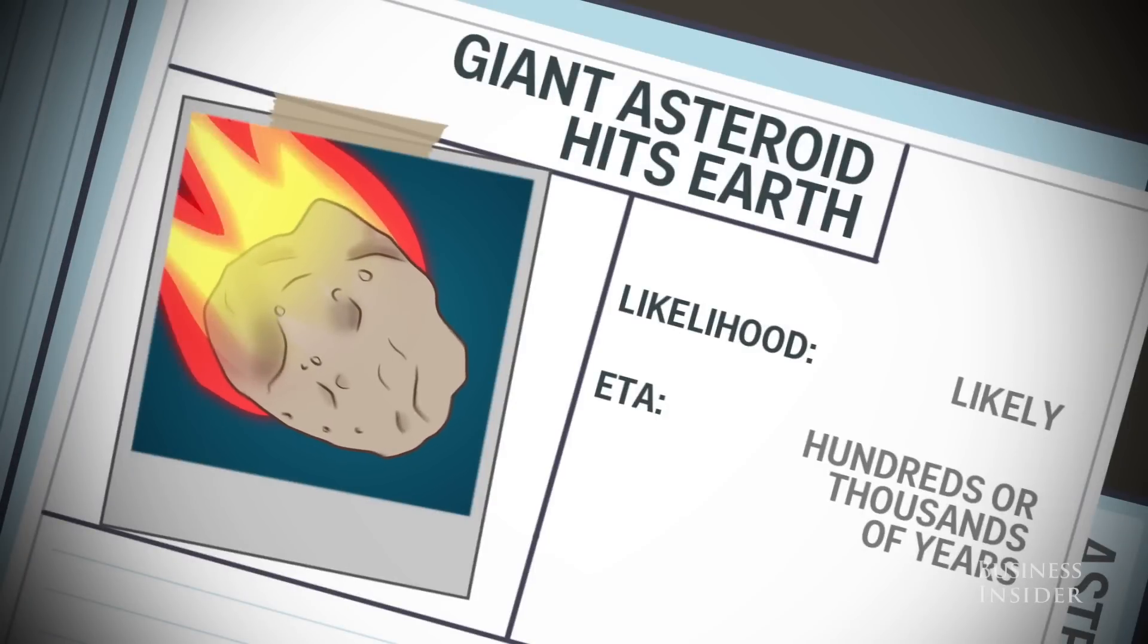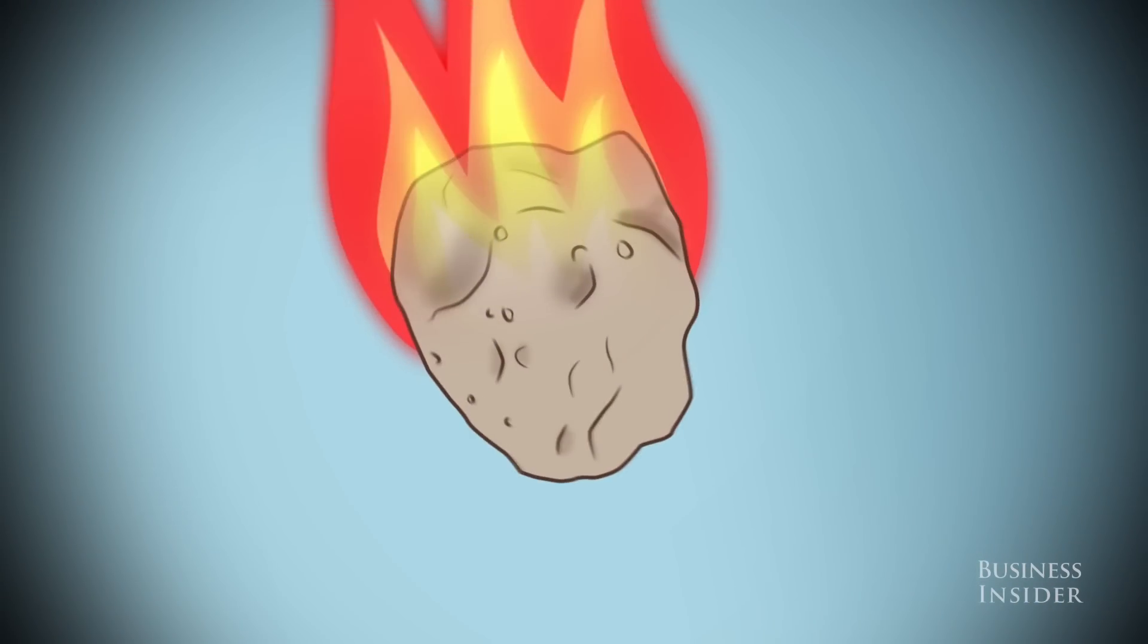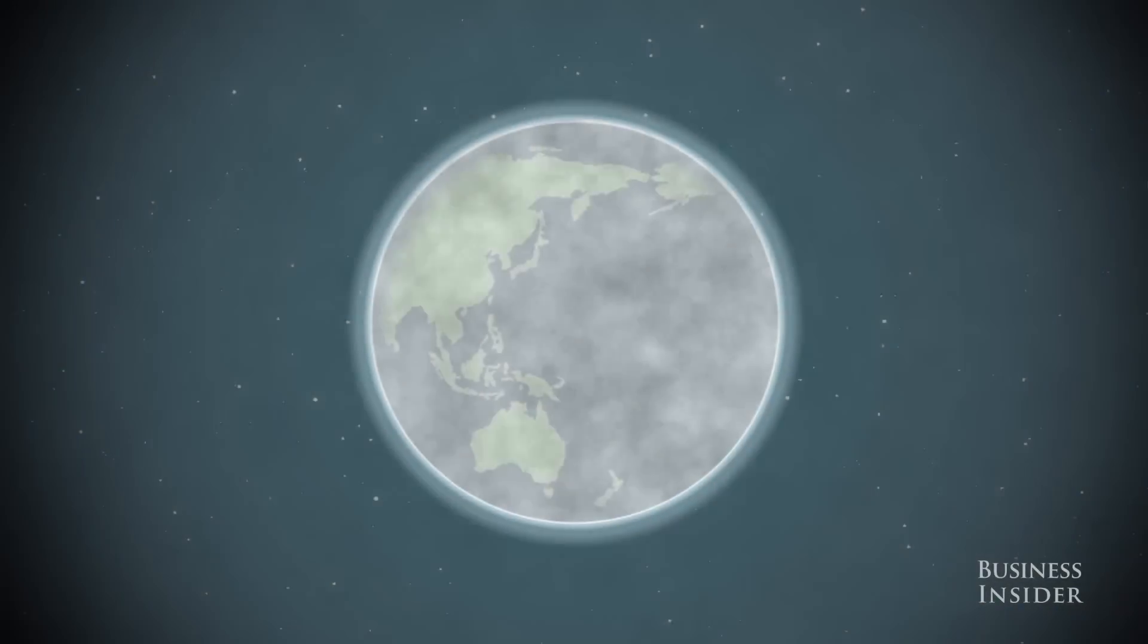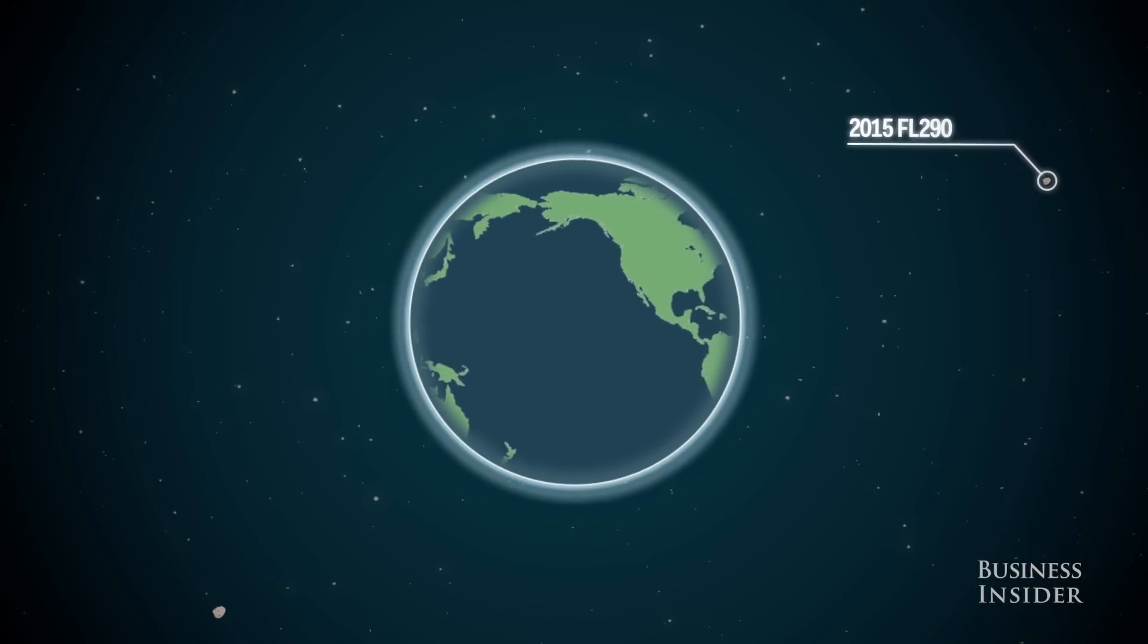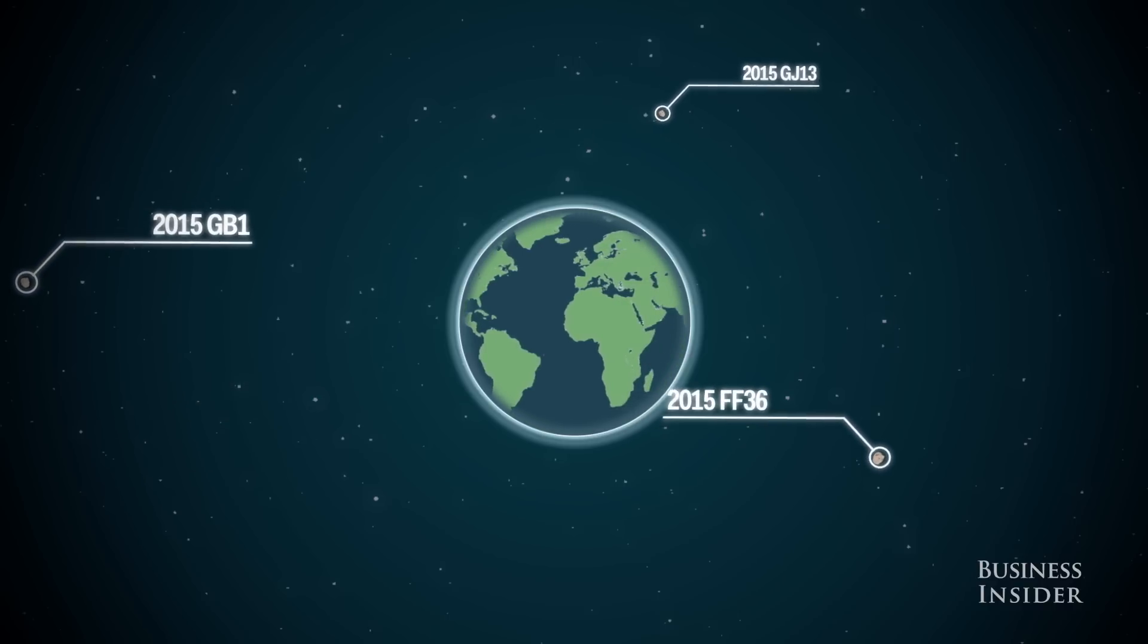We could suffer the same fate as the dinosaurs. When a six-mile-wide asteroid crashed into the planet 65 million years ago, it caused 70% of species to perish. NASA is currently monitoring over a thousand near-Earth asteroids, and several hundred of them could be threats.